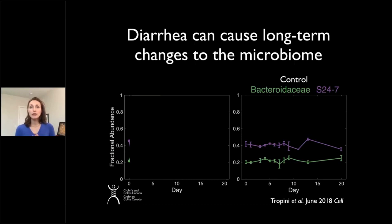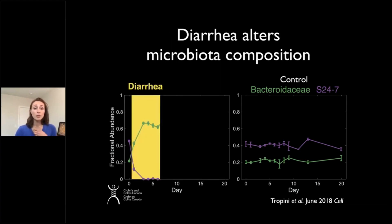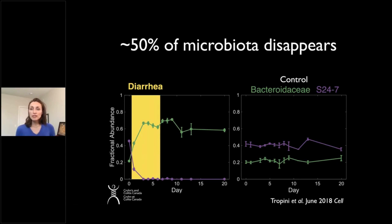About 30% of people have a family of bacteria called S247, and everyone has Bacteroidetes. In control samples, these bacteria are quite stable and make up a very large fraction of the human microbiota — S247 specifically starts at almost 50% of the microbiota. What we found, surprisingly, is that during diarrhea this entire family of bacteria became undetectable, while Bacteroidetes expanded to take advantage of the newly opened niche. Even more surprising was that when we removed the agent causing the diarrhea, S247 just never recovered.